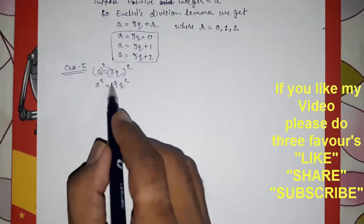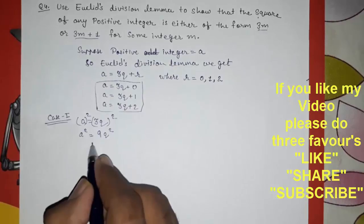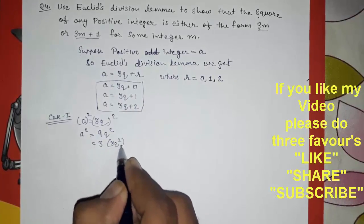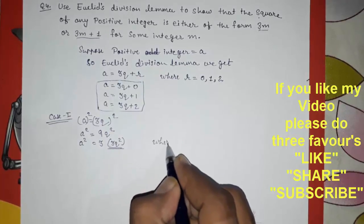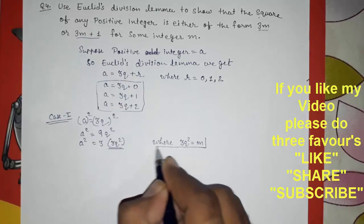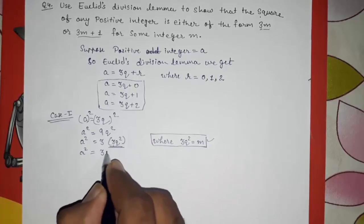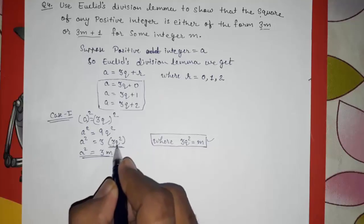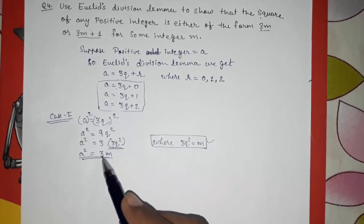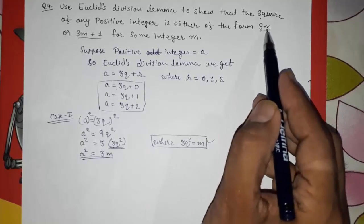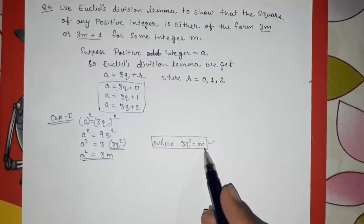We want the form 3m, so we take out 3 as a common factor: a² = 3(3q²). Here, we let m = 3q², so a² = 3m. The variable m represents the new quotient obtained after squaring — the problem uses m instead of q for this second-level quotient.